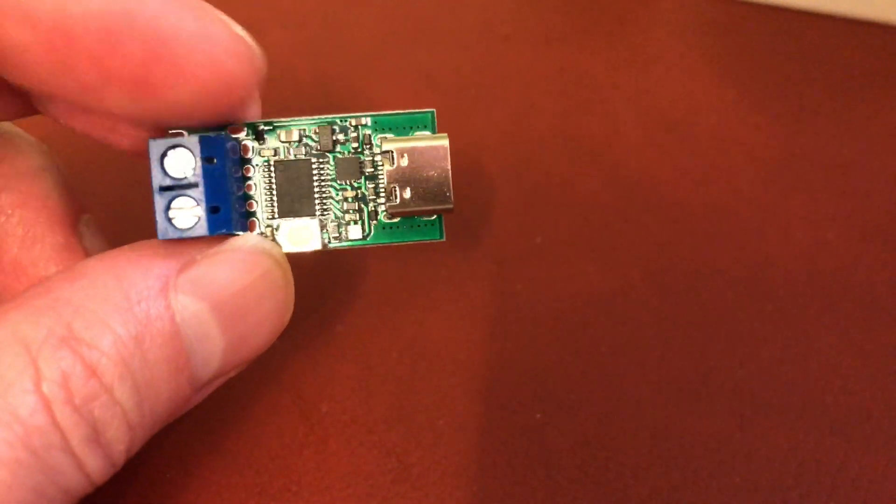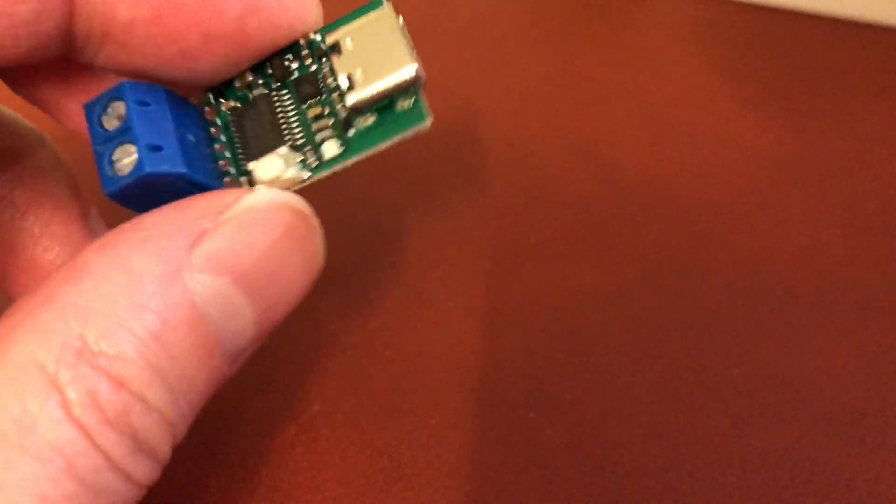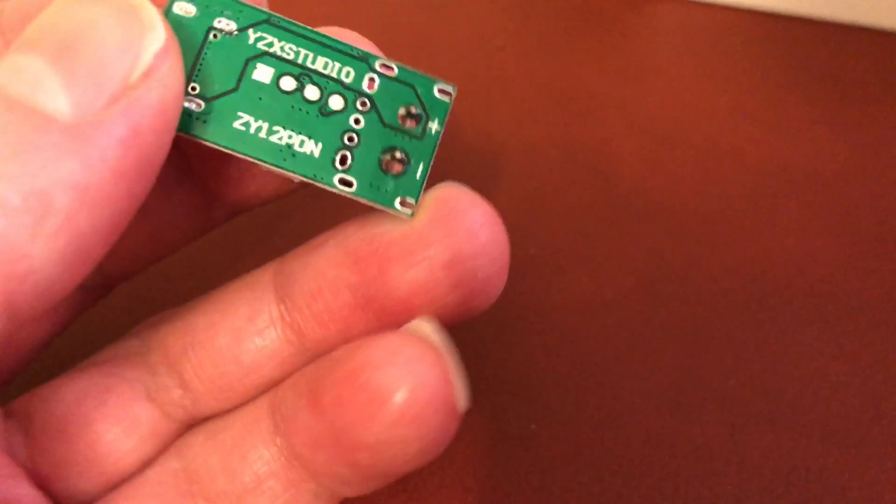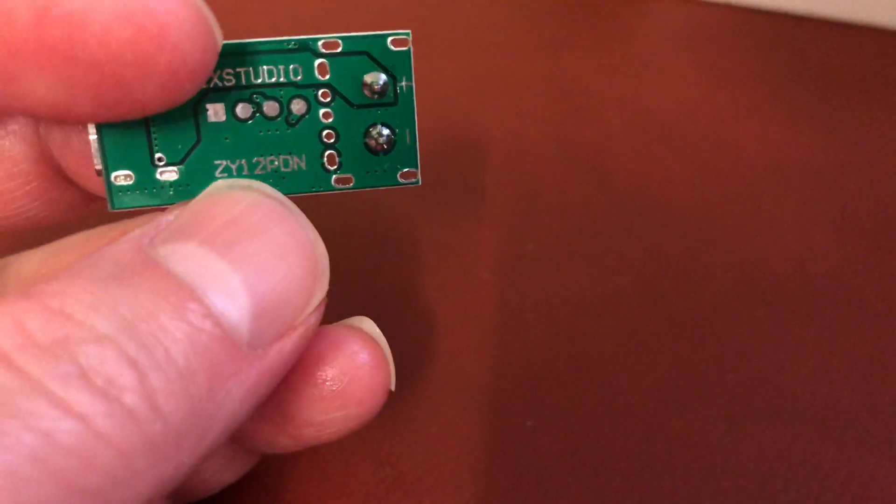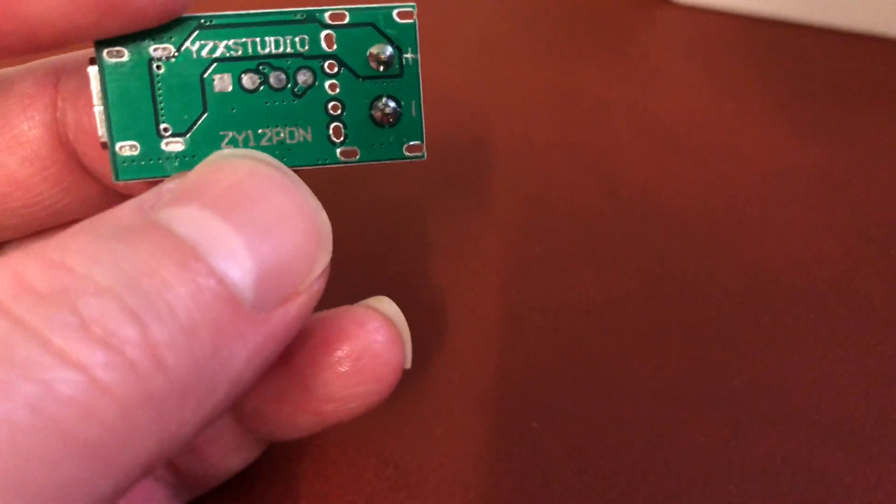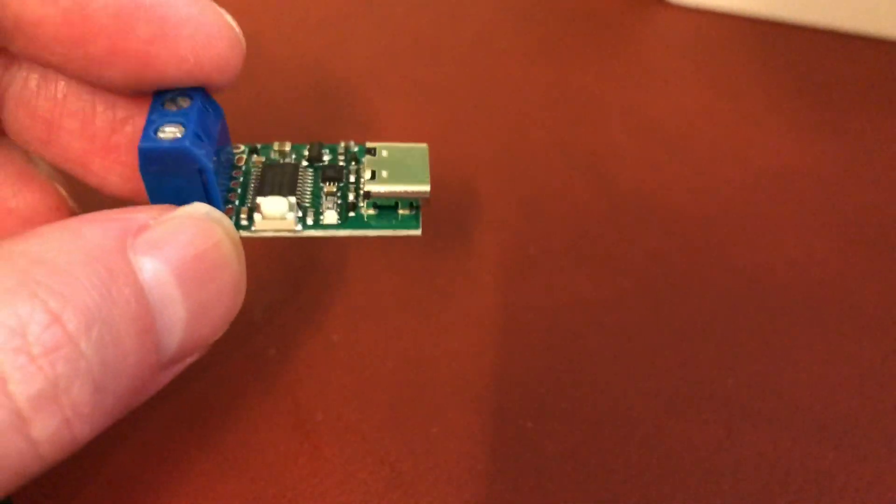I finally received this little circuit board from China, and it cost only over a quid. Before I go into details of what this does, just take note of that model number there: ZY12PDN. If you want one of these, you can search for them online on AliExpress preferably, because they're really cheap on there.